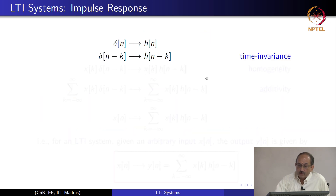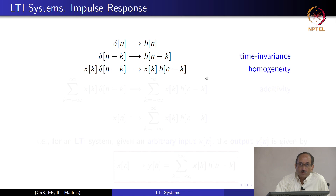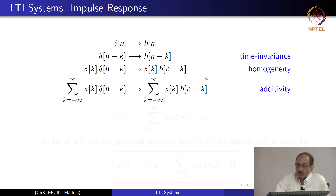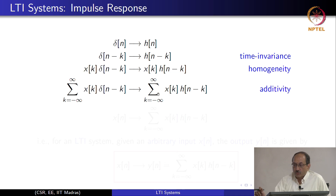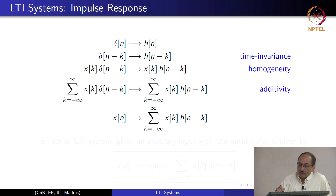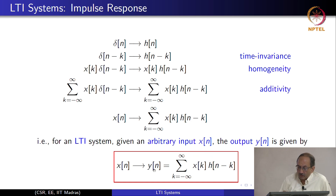Delta(n) produces h(n); delta(n minus k) produces h(n minus k) by time invariance. x(k) times delta(n minus k) producing x(k) times h(n minus k) is homogeneity. If you sum up over all k, x(k) times delta(n minus k) gives x(k) times h(n minus k) summed over all k — this is additivity for an infinite number of terms. Since x(k) delta(n minus k) summed over all k is just x(n), for an arbitrary input x(n) applied to an LTI system you get this as the output — the well-known convolution result.